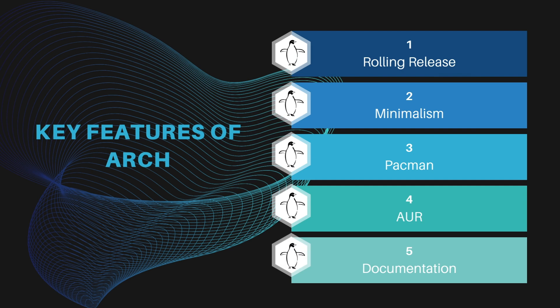Let's check the key features of Arch Linux. Rolling release: Arch Linux adopts a rolling release model ensuring users have access to the latest software updates without waiting for periodic releases. Minimalism: Arch Linux starts with a minimal installation, allowing users to build their own system from the ground up according to their preferences and requirements. Pacman package manager: Pacman offers a streamlined and efficient way to manage software packages, enabling users to install, update and remove packages with ease.